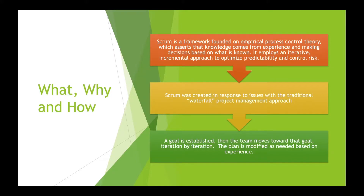Scrum is commonly used on software development projects, but it can be used to execute projects of any type. Scrum is categorized as an Agile approach, where Agile indicates that a project is defined and implemented iteratively through collaboration among team members and stakeholders. Change in the plan is frequent, is welcome, and value delivery is the focus.